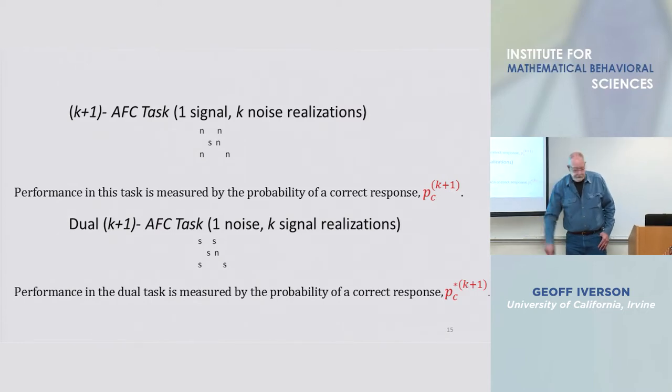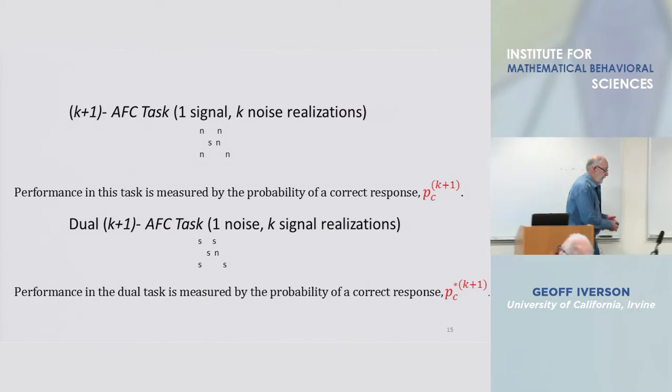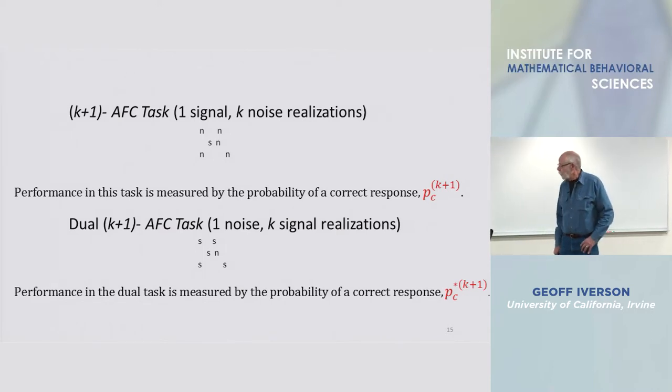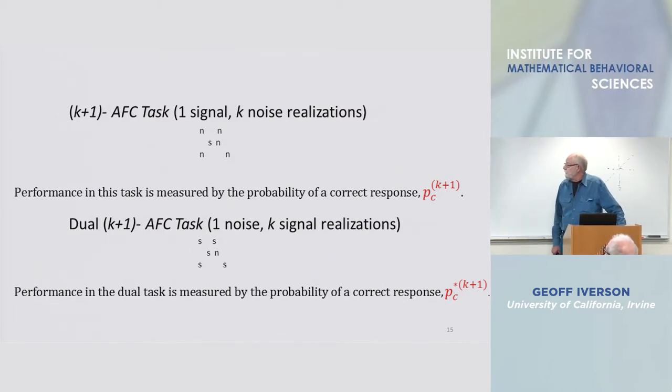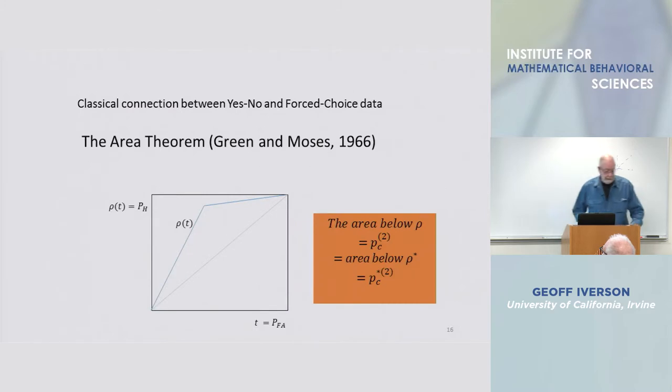And there's a dual task in which you have a whole bunch of studied, already studied words, their signals, with one that is the odd man out, unstudied, and the subject's task is to pick that guy.